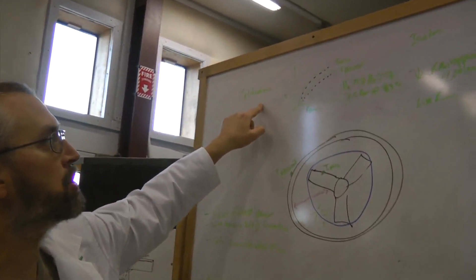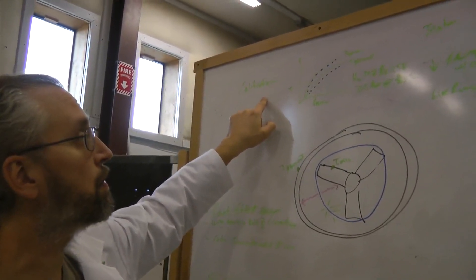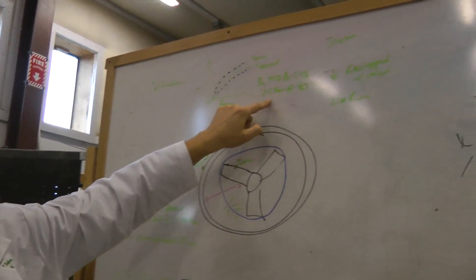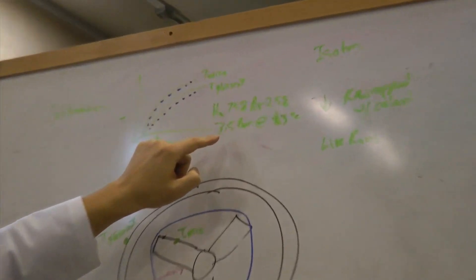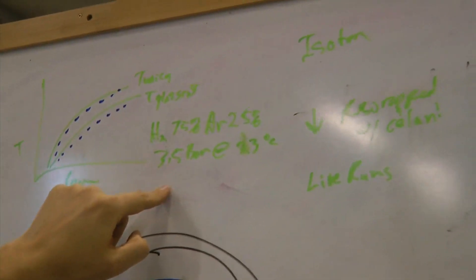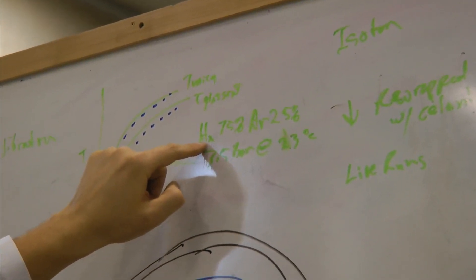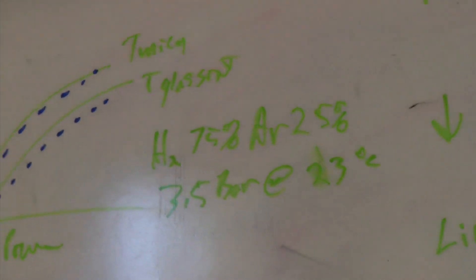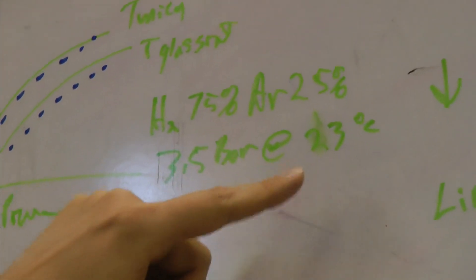What happened was, in our calibration data, we did a number of tests and came up with an average in the same gas conditions that we're doing our first experimental run at: 75% hydrogen, 25% argon, 3.5 bar at room temperature.